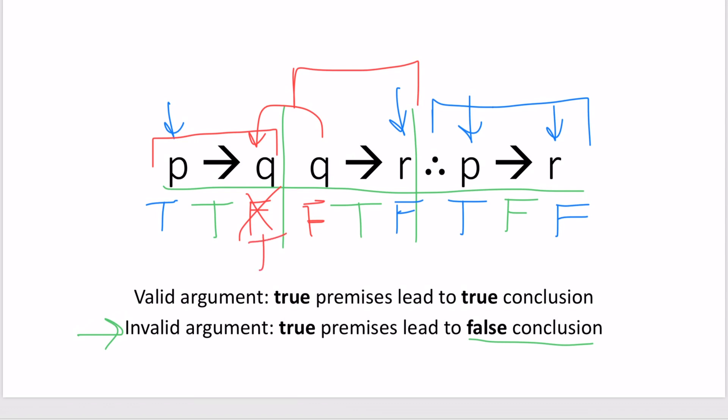So, what we have here is a contradiction, because we've shown that q will have to be both true and false at the same time, and that's not going to work. So, our assumption that this whole argument is invalid is wrong. We showed that the false conclusion could not come from the true premises. So, this is not invalid. Instead, we conclude that it is valid.